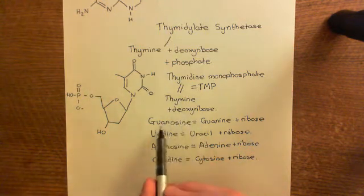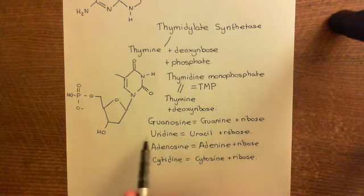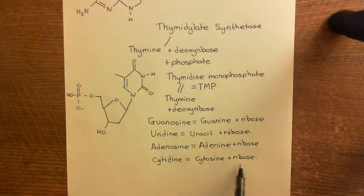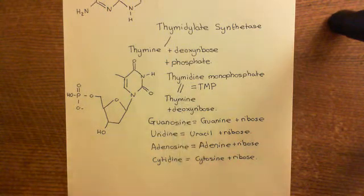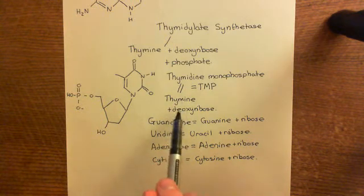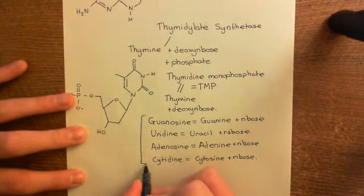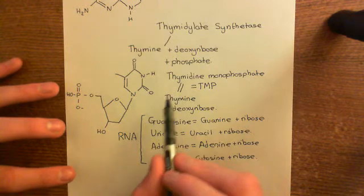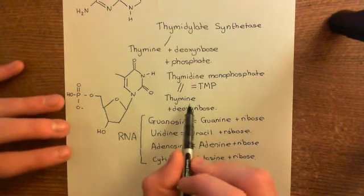If you want to talk about guanine plus deoxyribose, that's called deoxyguanosine. Similarly, uracil plus deoxyribose would be deoxyuridine; adenine plus deoxyribose is deoxyadenosine; cytosine plus deoxyribose is deoxycytidine. But thymidine is not thymine plus ribose — it's thymine straight away plus deoxyribose. The reason is that structures where you have the organic base bound to ribose are incorporated into RNA rather than DNA, and you do not put thymine into RNA — you put it into DNA. So there is no name for thymine plus ribose; thymidine straight away means thymine plus deoxyribose.